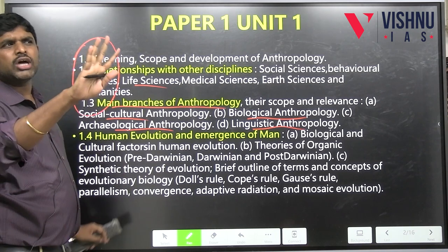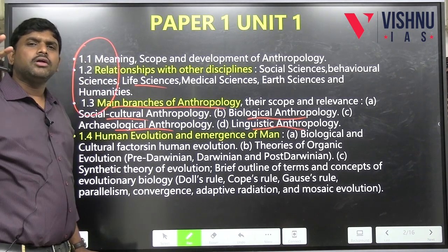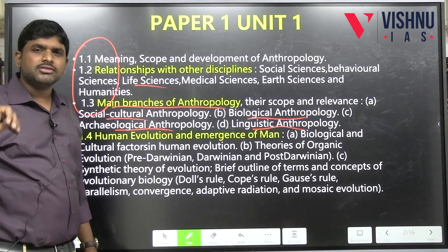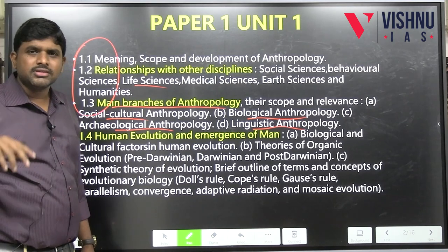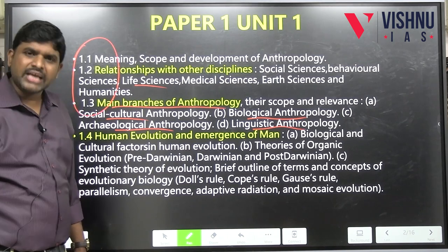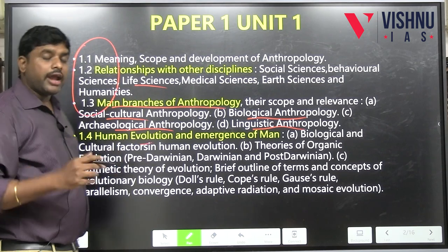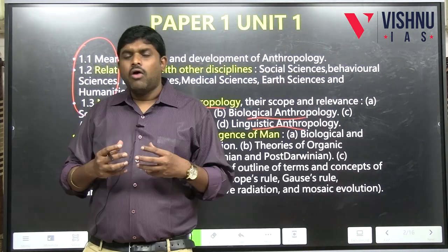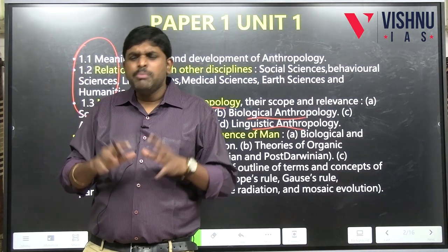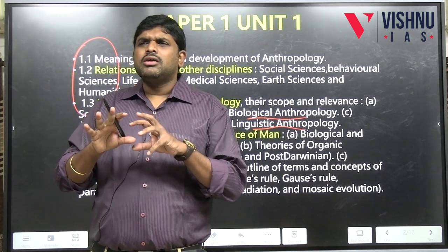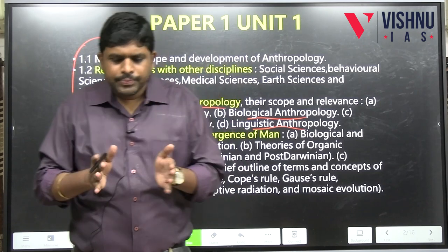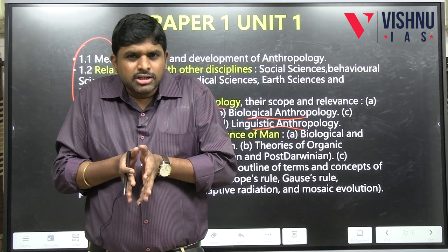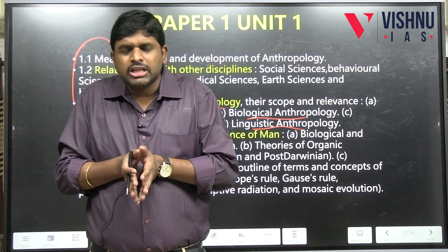You'll be able to tell me: socio-cultural anthropology — I understood this; biological anthropology — I understood this; linguistic anthropology — I understood this; archaeological anthropology — I understood this. Now, Unit 1.4 covers evolution and emergence of man. Human evolution can be complex. We have Darwin, who wrote the theory of organic evolution.